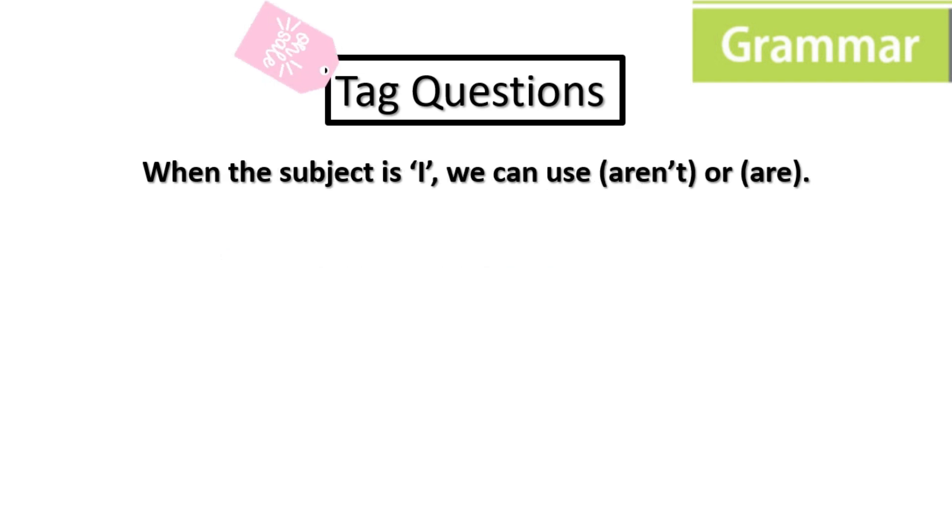When the subject is I, we can use aren't or are. Usually with I, we use am. But in the tag question, we can use aren't or are. For example, I am your friend, aren't I. So, I is the subject. But we can use aren't I as the tag question.